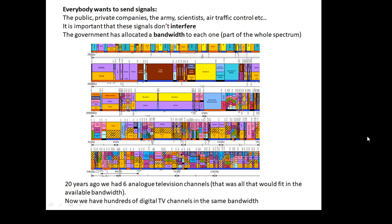Now everybody wants to send signals - the public, private companies, the army, scientists, air traffic control, radio, digital radio. Everybody wants to send signals. And it's very important that all these signals don't interfere with each other. So everybody gets a little bit of a chunk of the possible frequencies. The government allocates a bandwidth - a bandwidth is part of the electromagnetic spectrum that they are allowed to use.